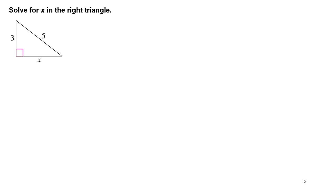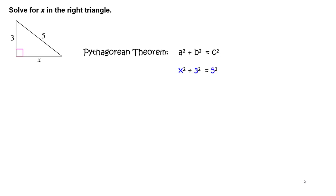Solve for x in the right triangle. Use the Pythagorean Theorem: a squared plus b squared equals c squared. Substitute x for a, 3 for b, and 5 for c.